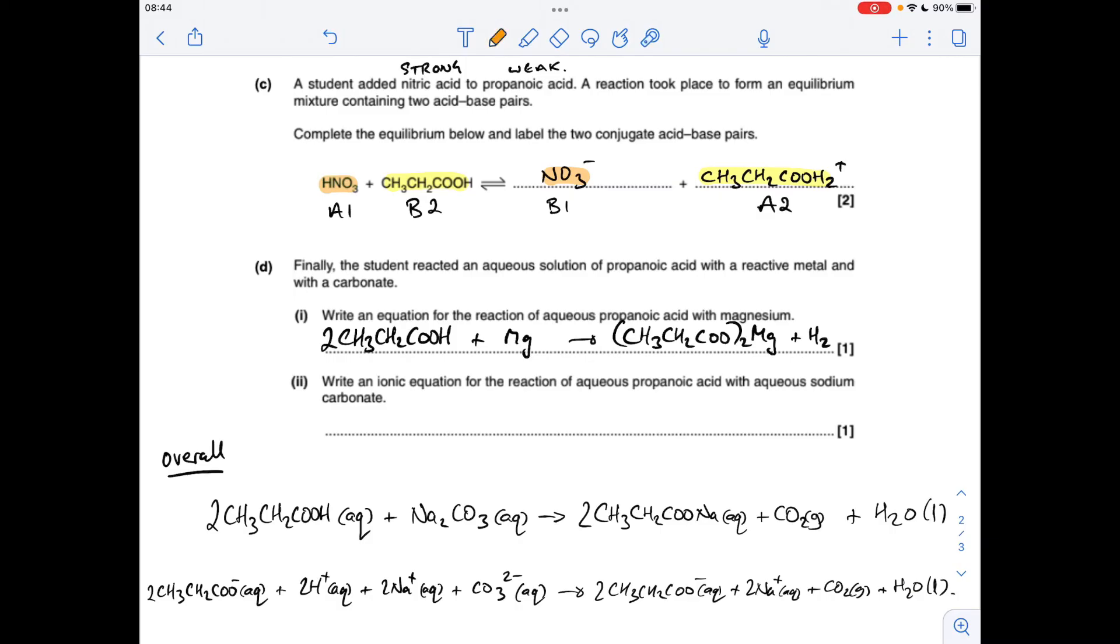So all we do now is cancel out the spectator ions, the ones that don't change. The propanoic ions appear on both sides of the equation, so they disappear. Likewise, the sodium ions do as well. So whatever's left is your ionic equation.